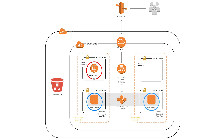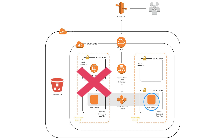This architecture works, but the disadvantage is if the availability zone where our NAT gateway is located was to go down, then the private subnet in the second availability zone would not have access to the internet and our application would not be available.